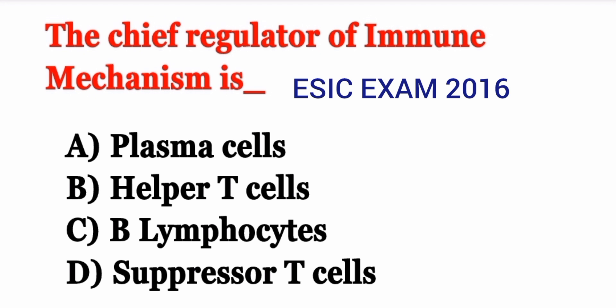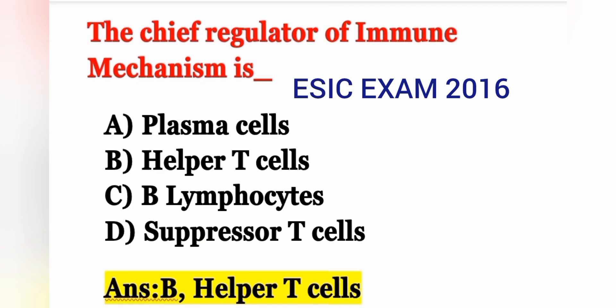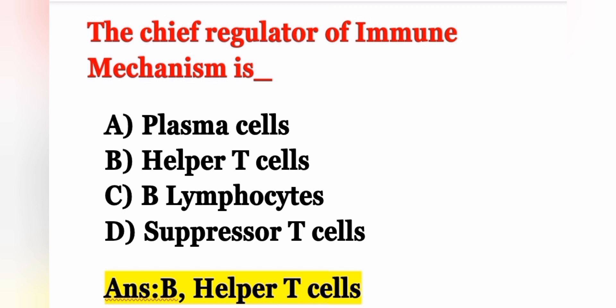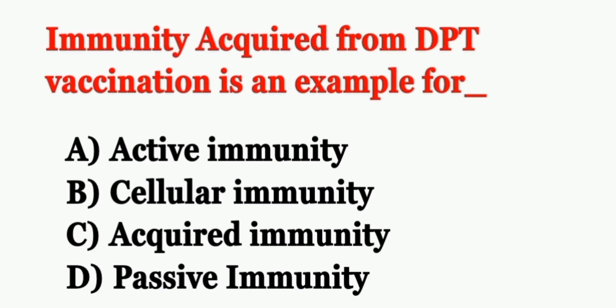First question: The chief regulator of immune mechanism is — Option A: plasma cells, Option B: helper T cells, Option C: B lymphocytes, Option D: suppressor T cells. The correct answer is Option B, helper T cells. Helper T cells can synthesize cytokines, which have cytotoxic activity — meaning they can destroy pathogenic organisms or microorganisms that infect our body.